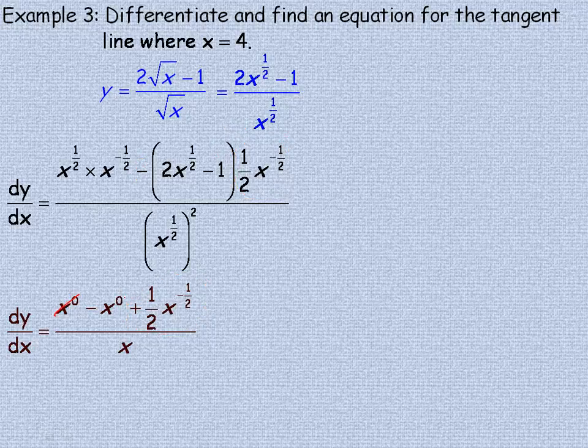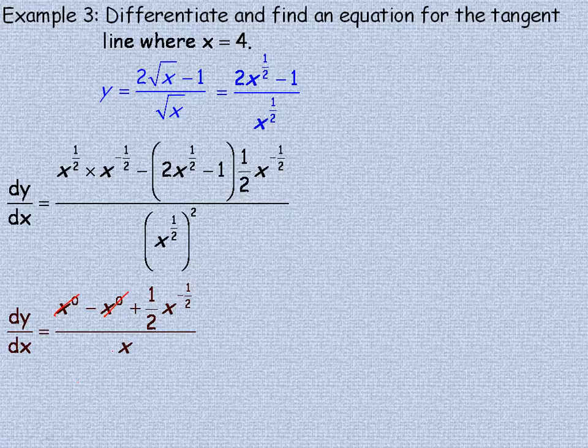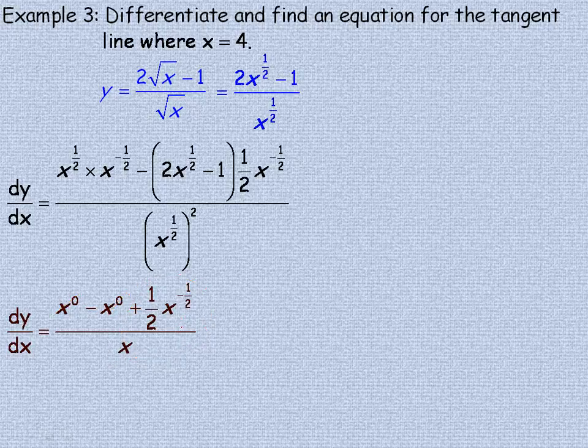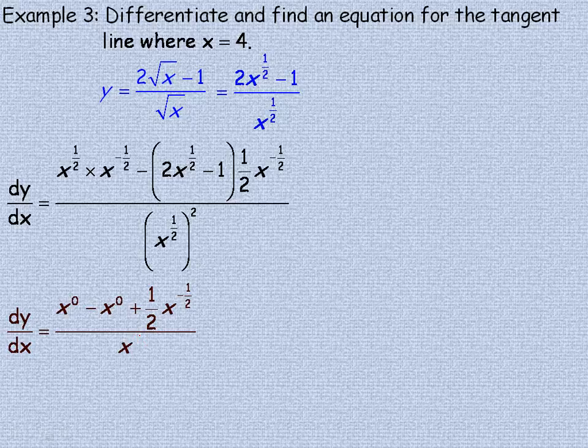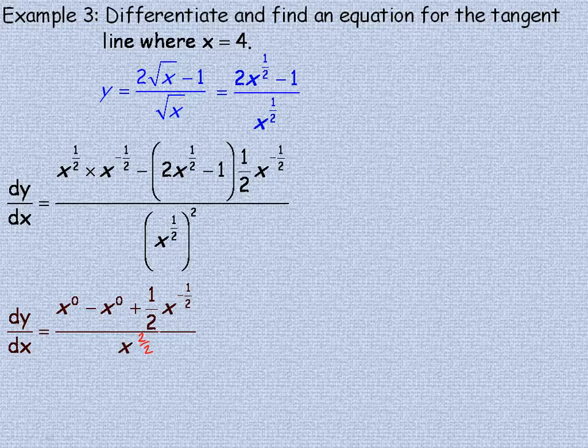Now these x to the zeroes are the same, so we'll subtract them and they're gone. So we really just have this left. Now there's an exponent of 1 here, and 1 is of course the same as 2 halves to get a common denominator. So we're actually dividing, remember that's what that horizontal line means.